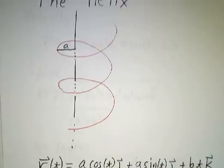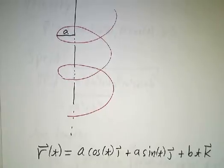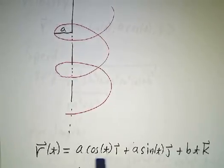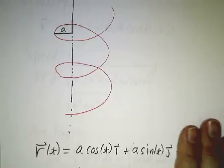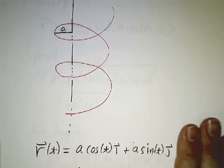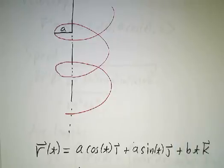A helix is given by the curve a·cos(t)i + a·sin(t)j + b·t·k. If you project it onto the xy-plane, it's just going around in a circle of radius a. But at the same time, it's going upwards at a rate b.